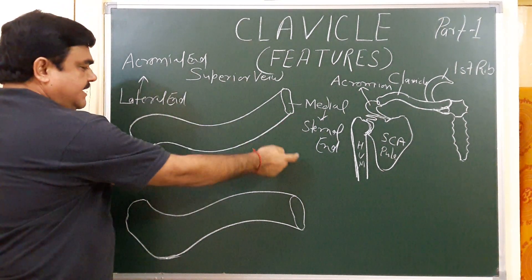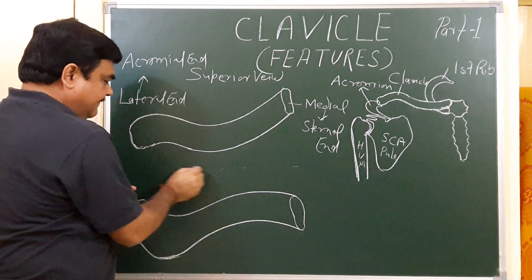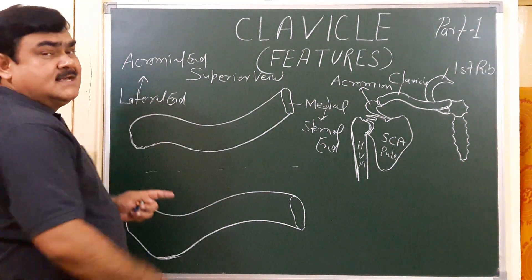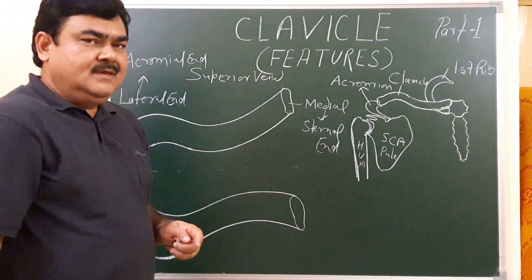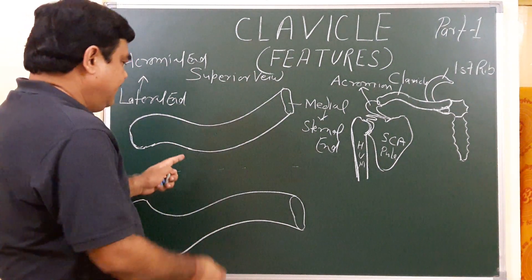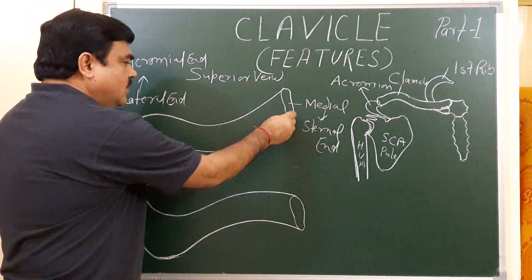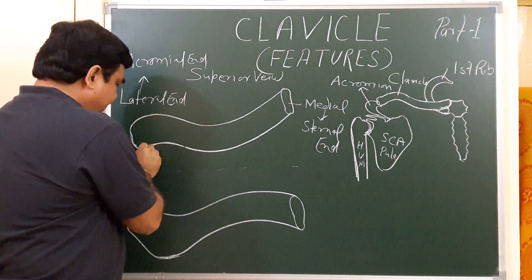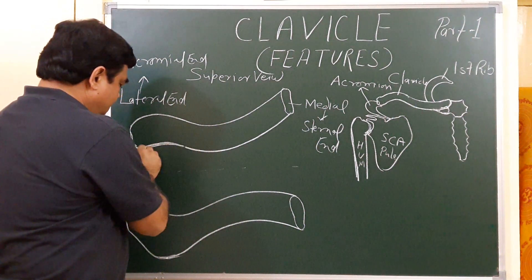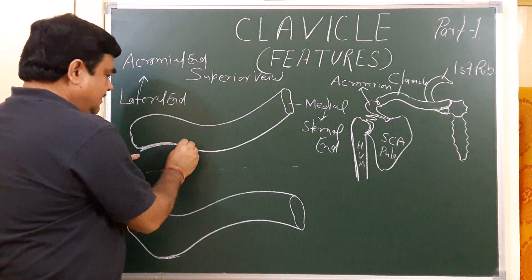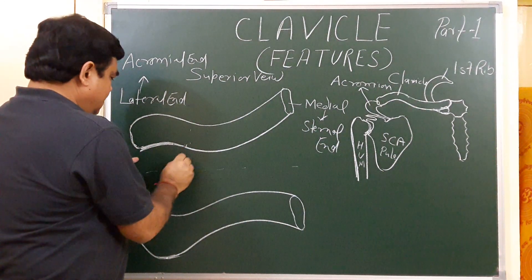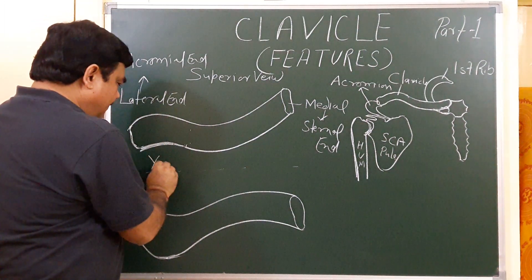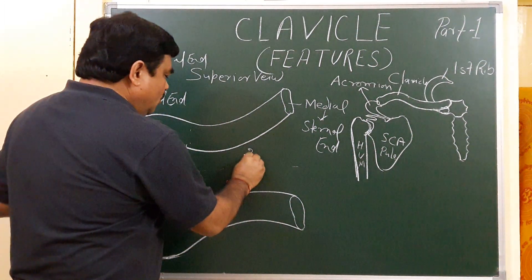Between these two ends there is the shaft. This shaft is divided into two parts because it has two curvatures: the lateral one-third part and the medial two-thirds part.